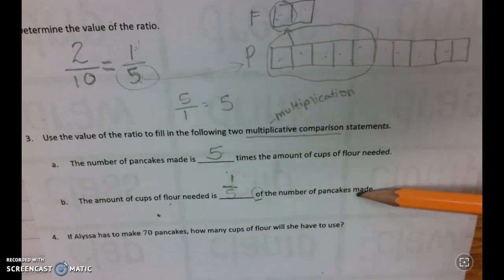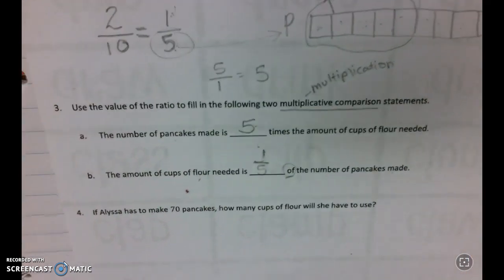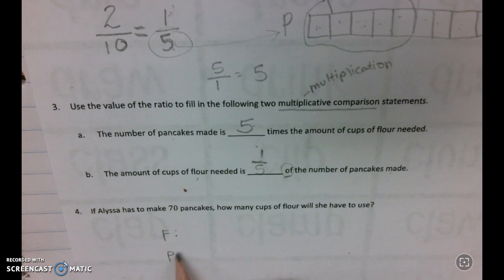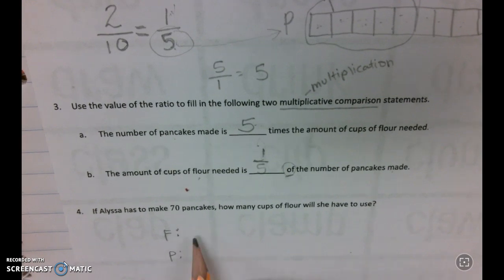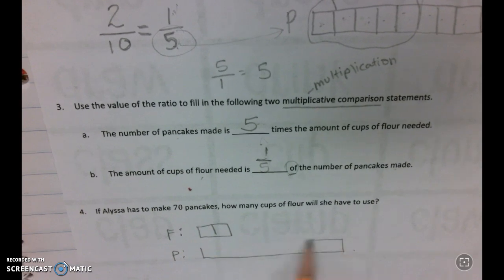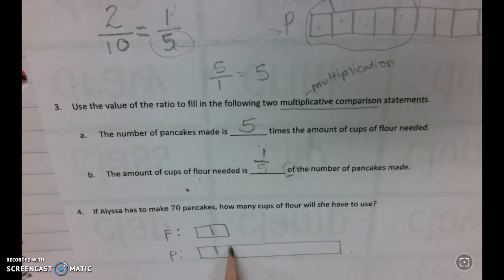Question four: If Alyssa has to make 70 pancakes, how many cups of flour will she have to use? Again, we can go back to where we're kind of comfortable because we've done several days of problems like this. If we have our ratio of 2 to 10...